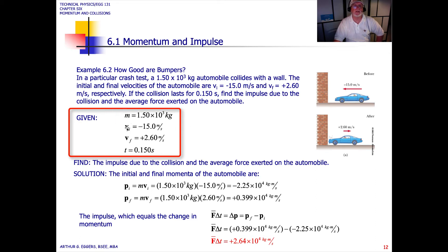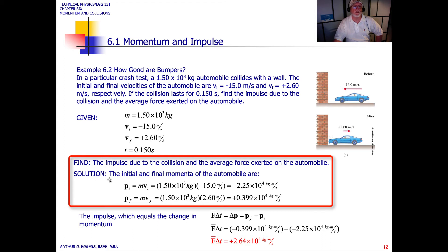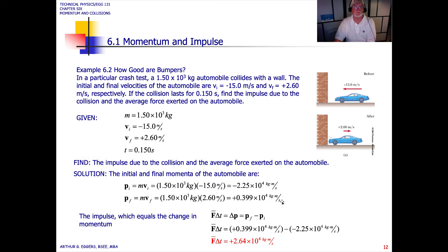Here's all of our givens: mass, velocity initial and final, and the duration, 15 hundredths of a second, or 150 thousandths of a second. The impulse due to the collision and the average force exerted on the automobile is calculated by first determining the momentum. The initial and final momentum of the vehicle are, we just used, it can't get any simpler than this. P initial is equal to mass times velocity initial. P final is equal to mass times velocity final. The momentum initial is minus 2.25 times 10 to the fourth kilogram meters per second. And final plus 0.399 times 10 to the fourth kilogram meters per second.